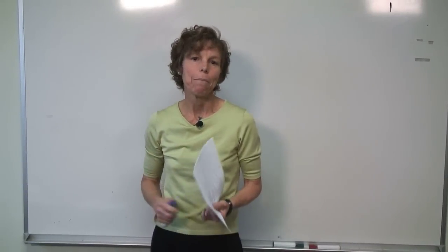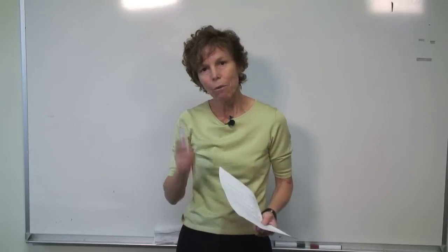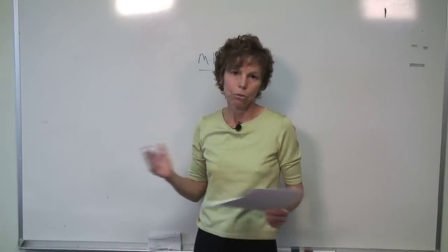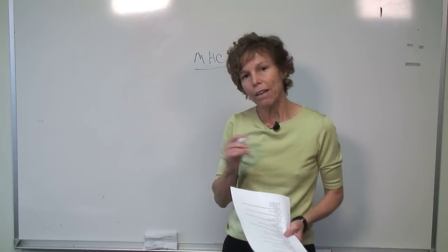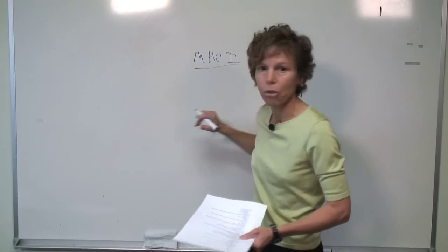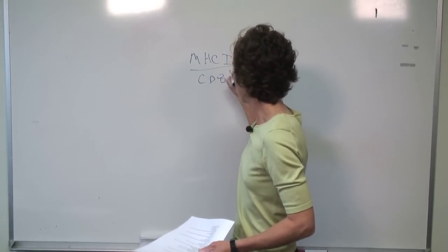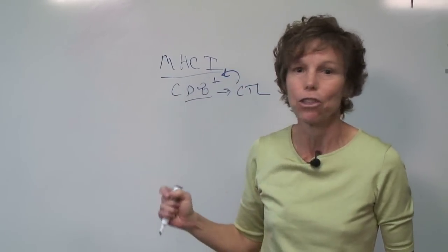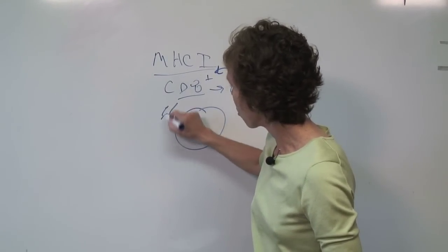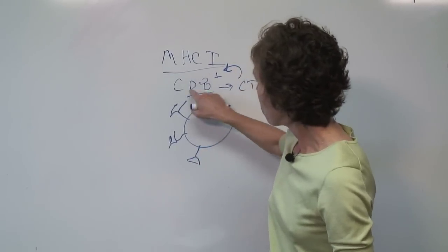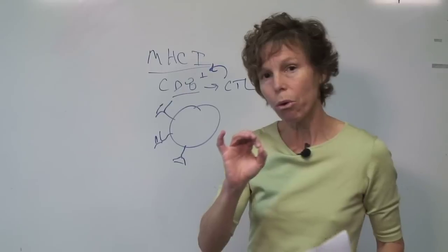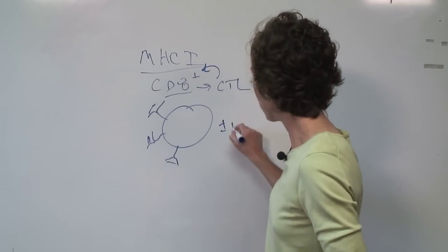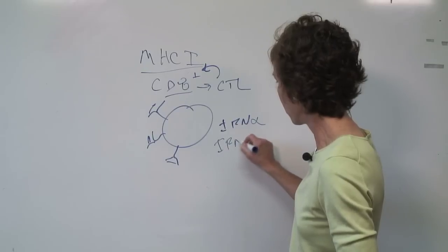We'll pick up where we left off talking about MHC class 1 and MHC class 2 molecules. Remember that MHC class 1 are found on all nucleated cells, so mature red blood cells don't have MHC class 1. This is particularly important with regard to CD8 positive cells, which are cytotoxic and will be able to kill cells that have pathogen antigen displayed in the MHC class 1 molecule. When a cell is infected by a virus, it will increase the expression of interferon alpha and interferon beta.